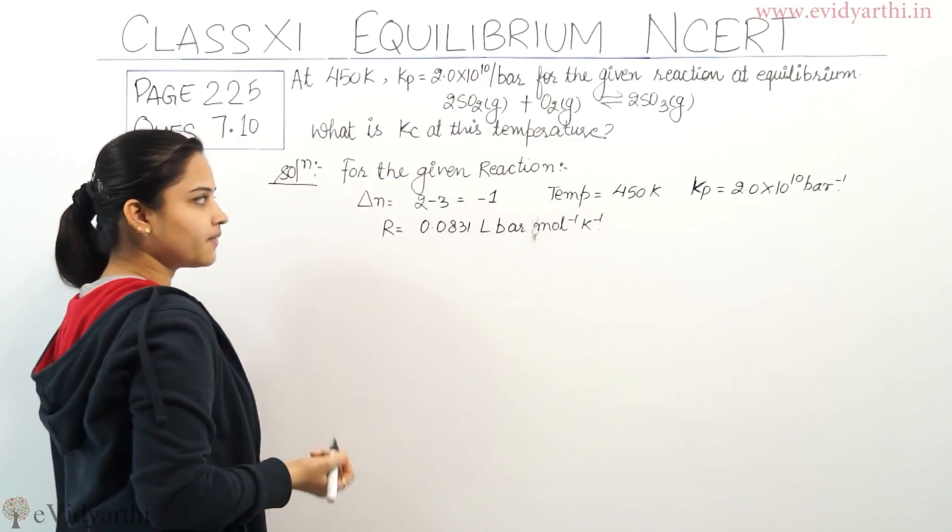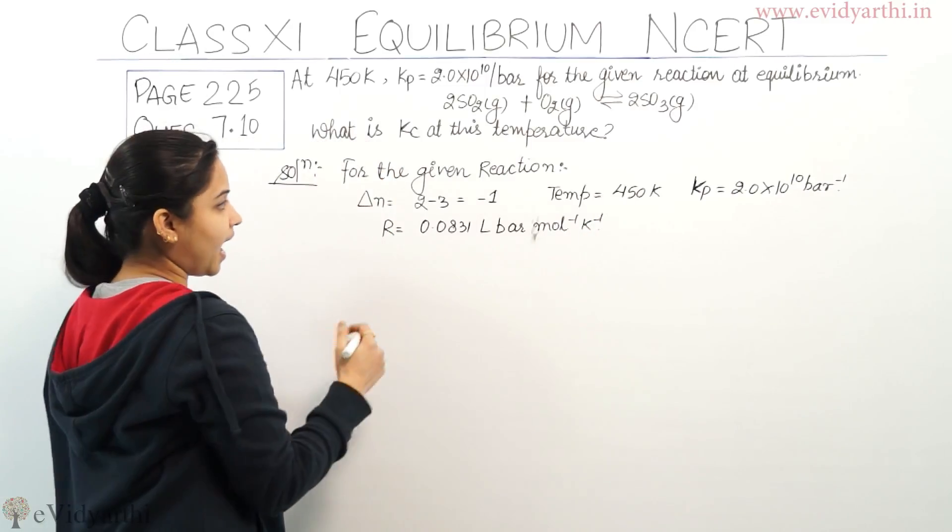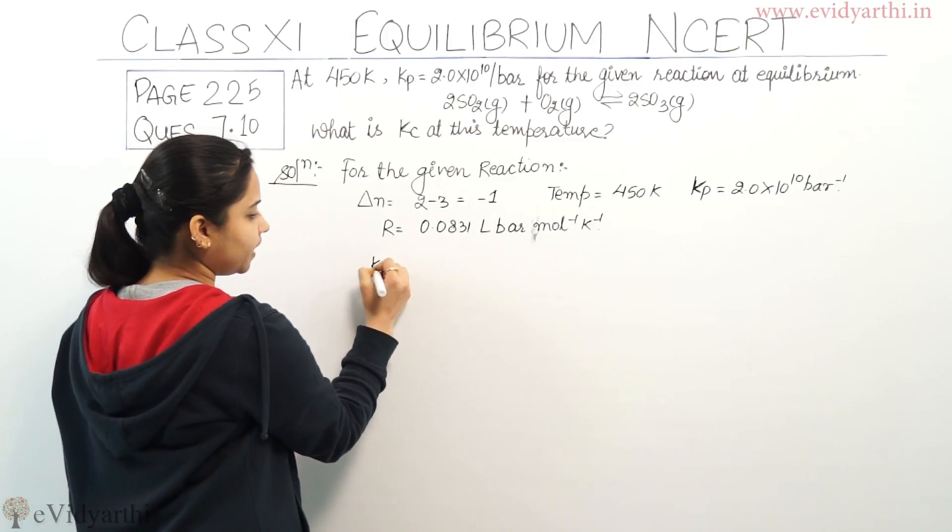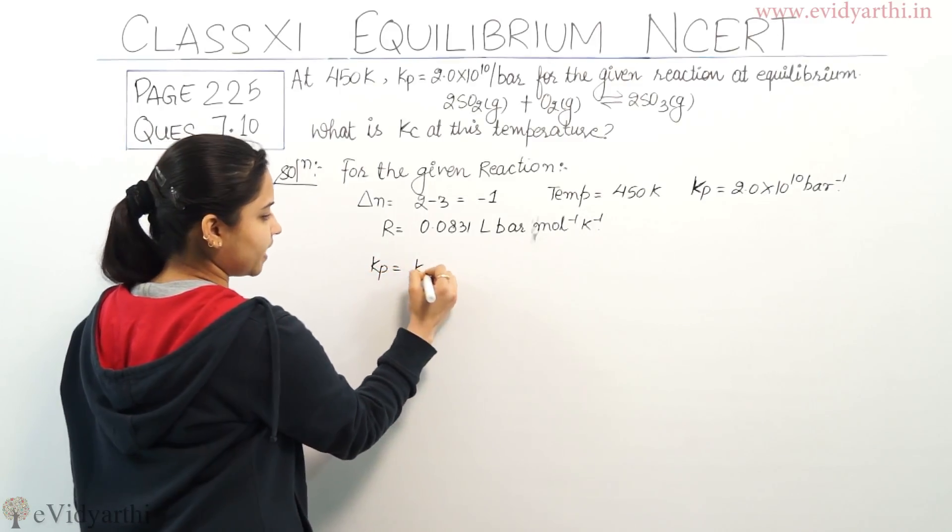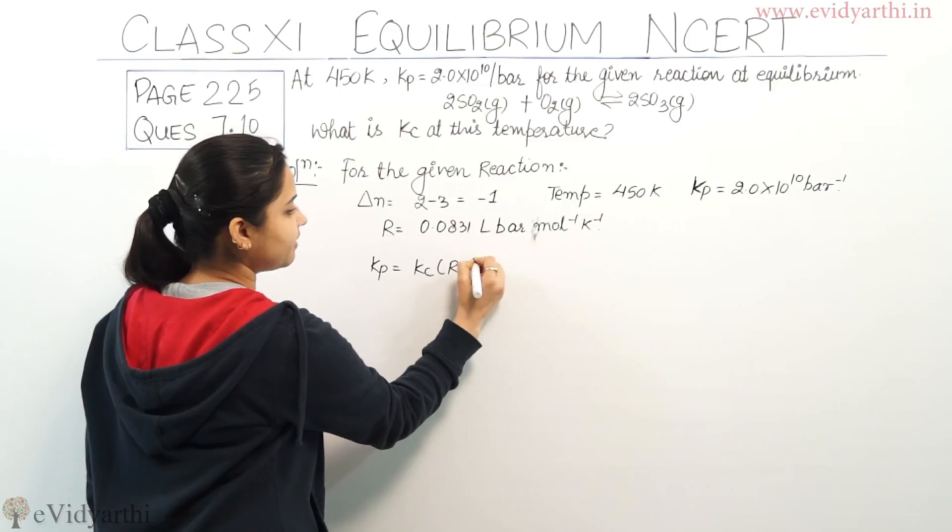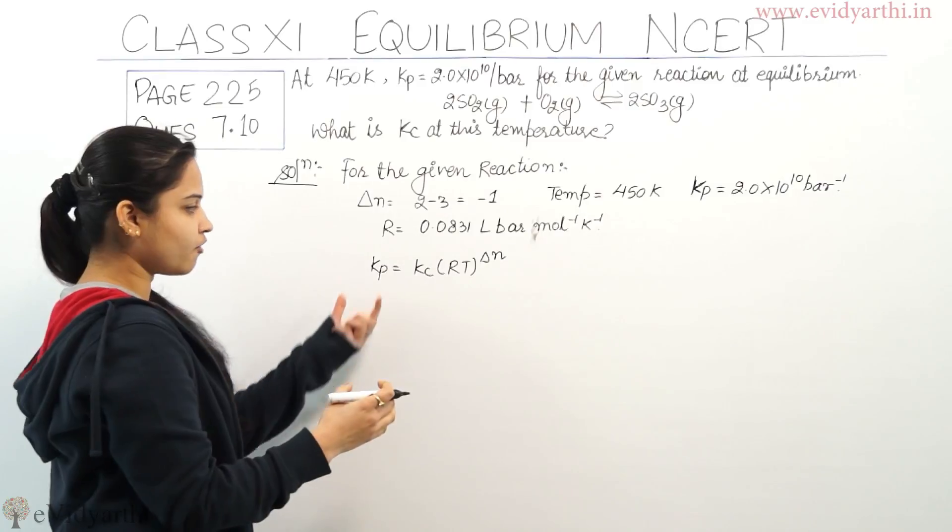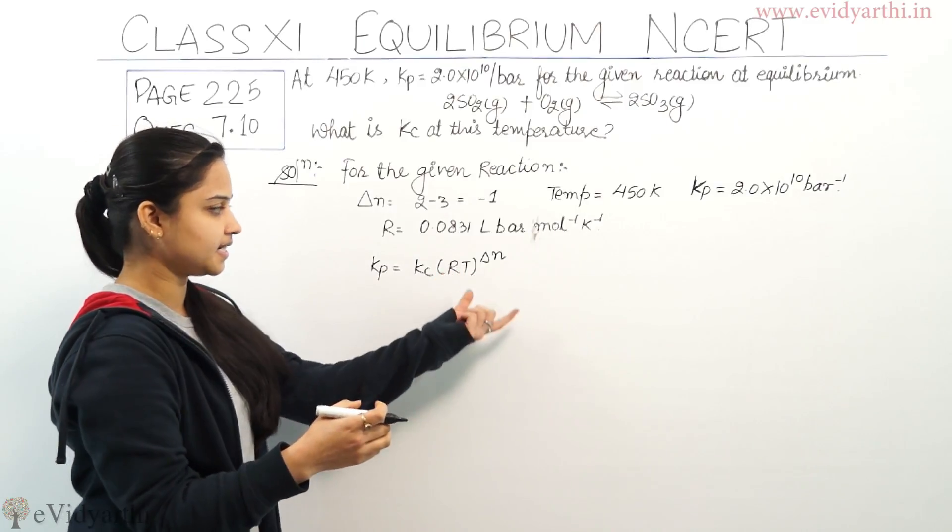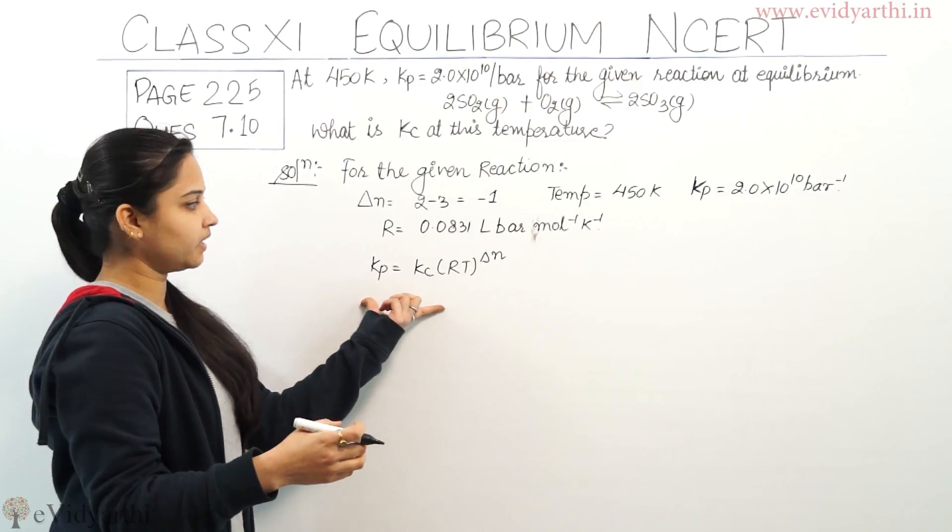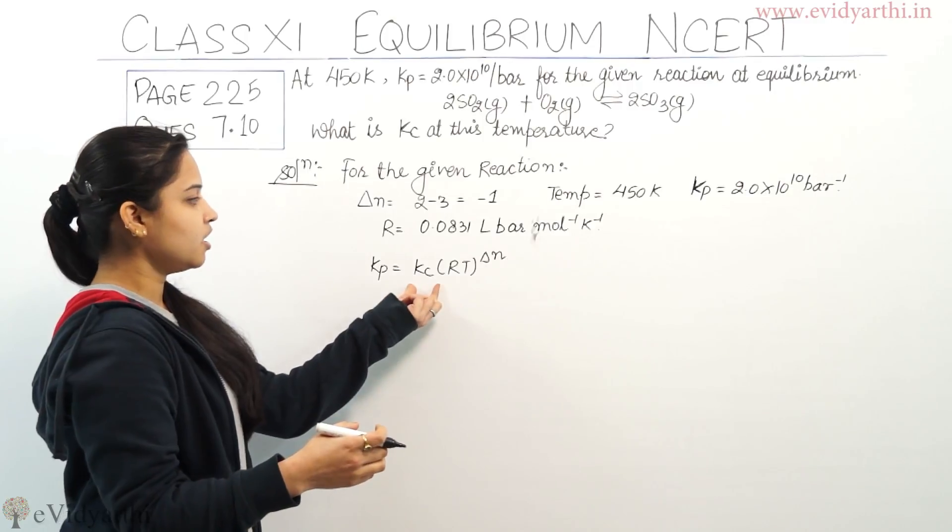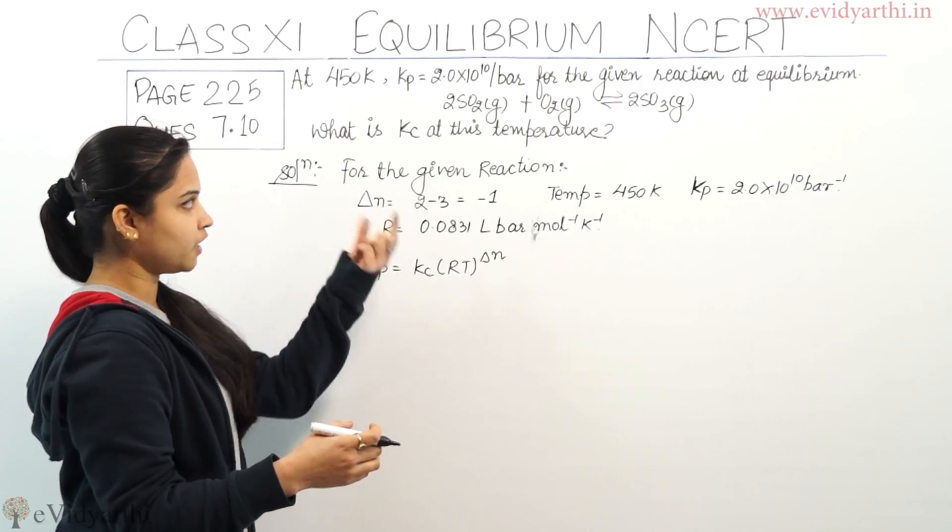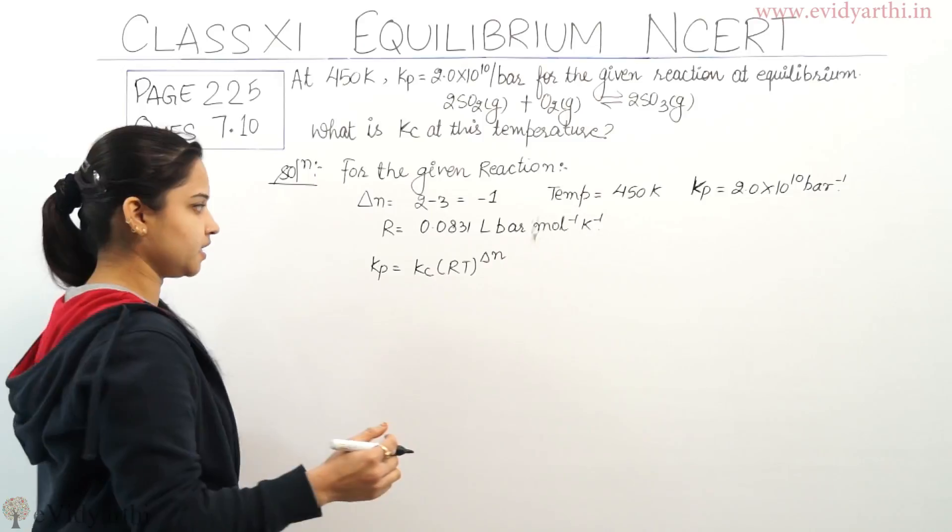So these are the values which are with us, and we know that Kp = Kc(RT)^Δn. So we will be substituting the values of Kp, RT, and delta n in this equation, and then we will be solving for Kc of the reaction at temperature 450 Kelvin.